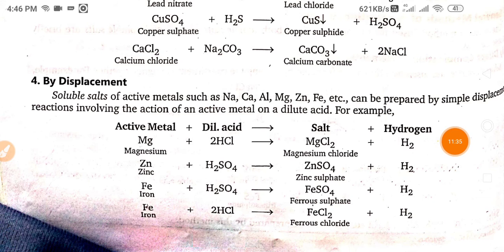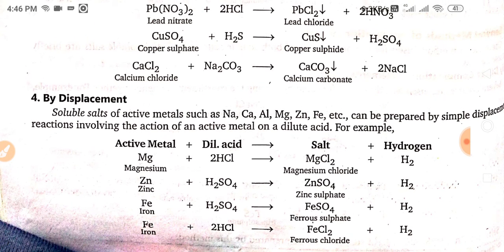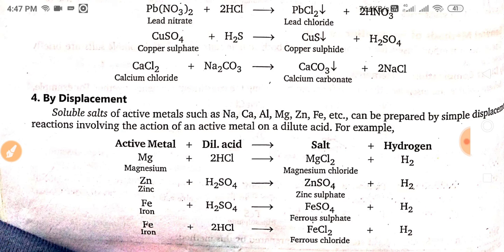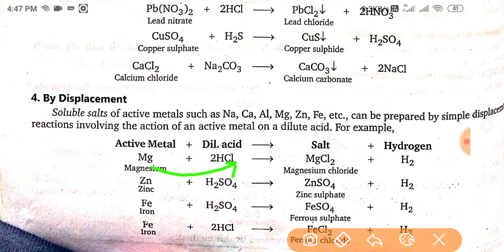The fourth method is by displacement. Soluble salts of active metals such as sodium, calcium, aluminium, magnesium, zinc, iron, etc. can be prepared by simple displacement reactions involving the action of an active metal on a dilute acid. The acid should be dilute, not concentrated. For example, magnesium reacting with dilute HCl forms MgCl₂, and zinc or iron reacting with HCl and H₂SO₄ form ferrous sulfate and ferrous chloride.